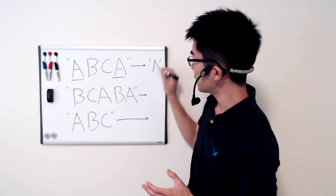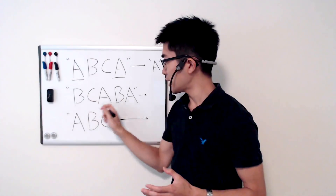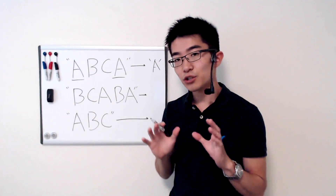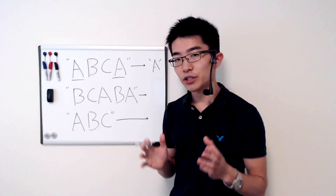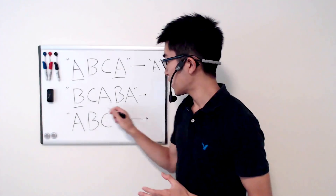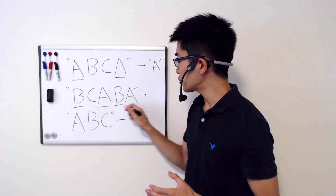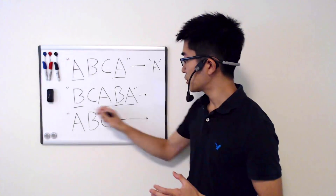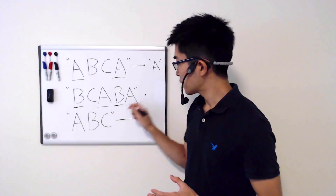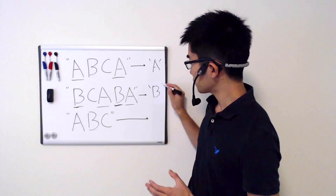If you're given this string — b, c, a, b, a — you see that there are two recurring characters, b and a, and the first recurring character is b, so you should return b from your function.